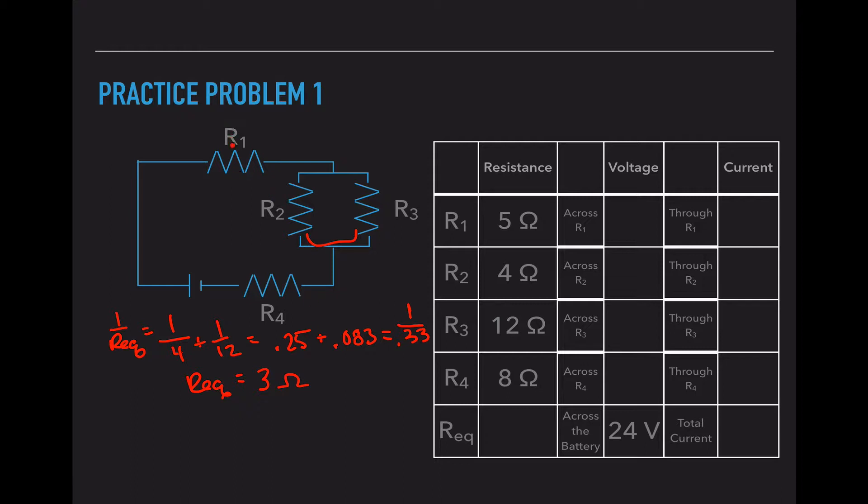So now I have to add R1, which is 5, R2 and 3 combined, which is 3, and R4, which is 8. 5 plus 3 plus 8 is a total of 16 ohms.